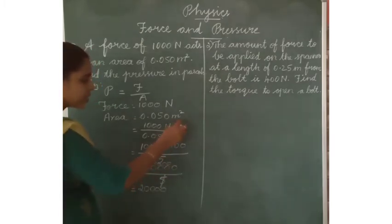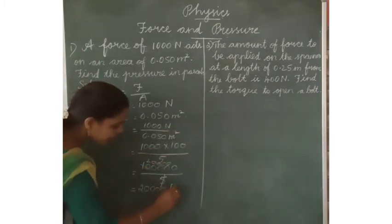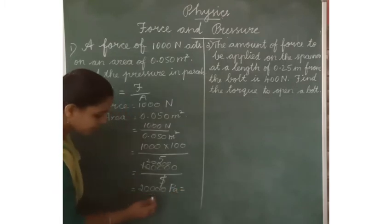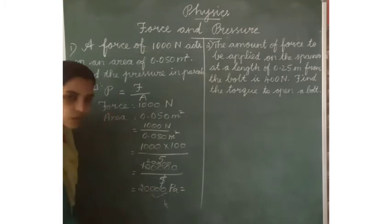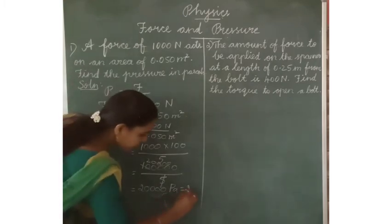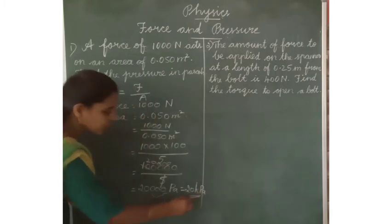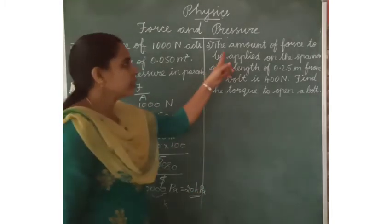We have to write the answer in Pascal. Instead of the three zeros, we write K for kilo. So the answer is 20 kilopascal.